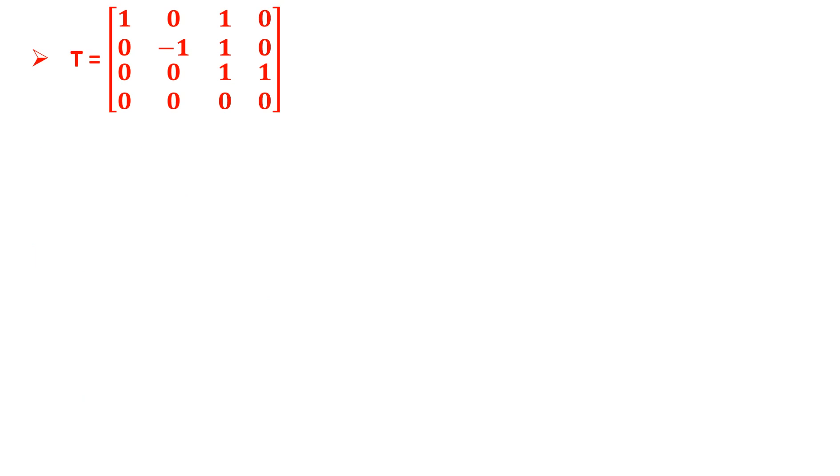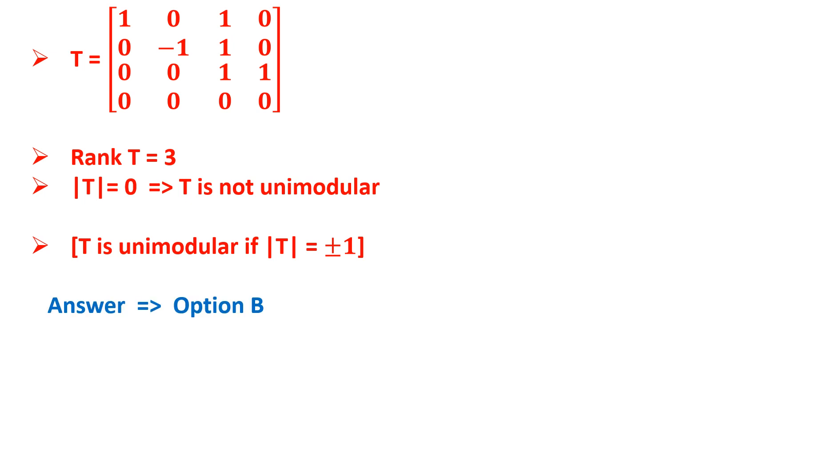Now here T is obtained and the rank of T is clearly 3, and the determinant of T is equal to 0 which implies T is not unimodular. We need to note that T is unimodular if determinant of T is equal to plus minus 1. Hence the correct answer is option B.